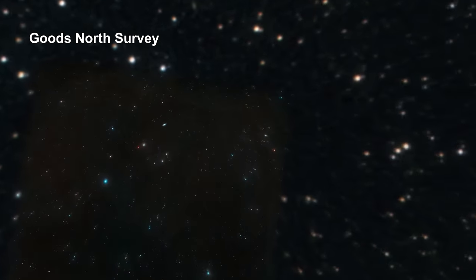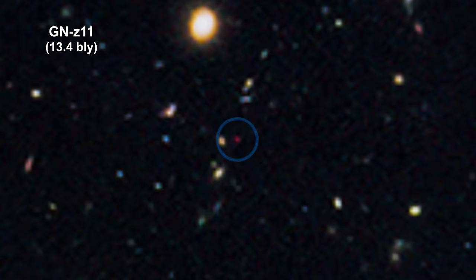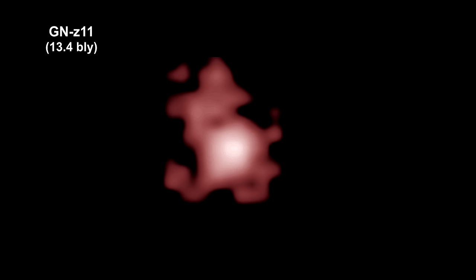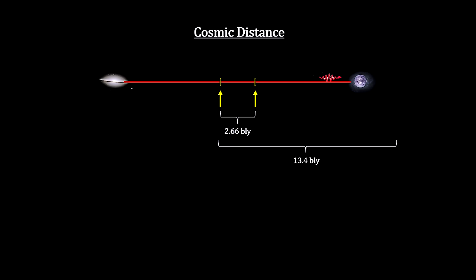Expanding space has significant implications for measuring distance. Here we are zooming into GNZ 11, the most distant object ever found. The galaxy's redshift, combined with Hubble's law, gives us the distance the light traveled, 13.4 billion light-years. And we know the speed of light, so the time traveled was 13.4 billion years. We normally say that the galaxy is therefore 13.4 billion light-years away. But during its long travel time, space expanded considerably. In fact, GNZ 11 was less than 2.7 billion light-years away from us when the light started its journey. And the galaxy is now over 30 billion light-years away.